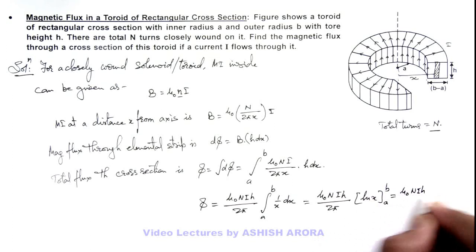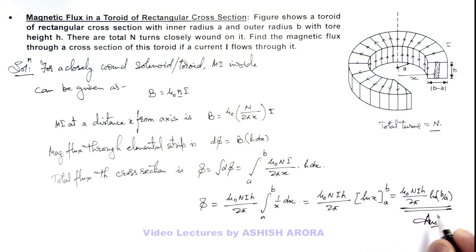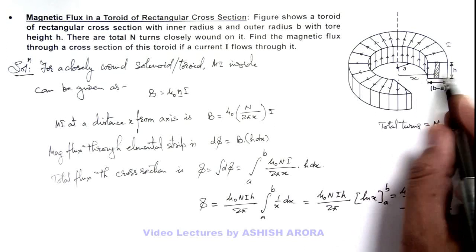We apply limits from a to b, and that will result φ = (μ₀NIh)/(2π) times [ln(b) - ln(a)] = (μ₀NIh)/(2π)·ln(b/a). This is the answer to this problem, which is the magnetic flux through this cross section.